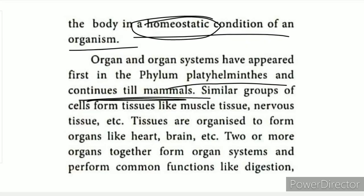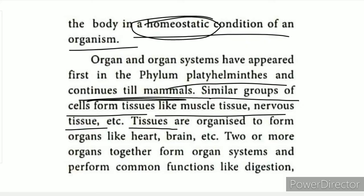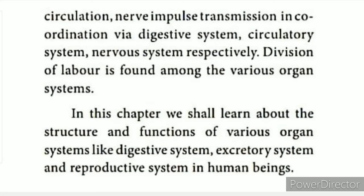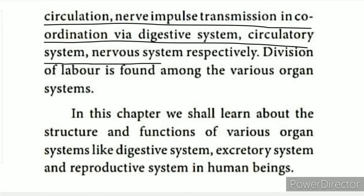Cells group together to form tissues, and tissues form organs — such as the heart, brain, liver, and kidney. When two or more organs work together, they form an organ system. For example, digestion is carried out by the digestive system, blood circulation by the circulatory system, and nerve impulse transmission by the nervous system respectively. Division of labor is found among the various organ systems.